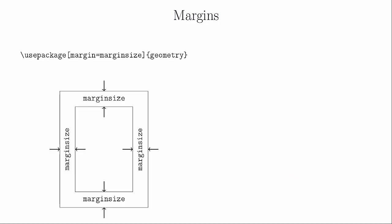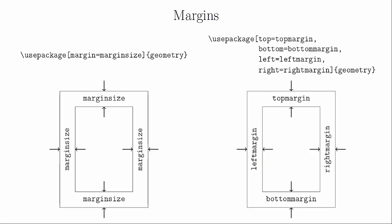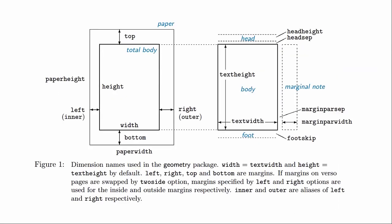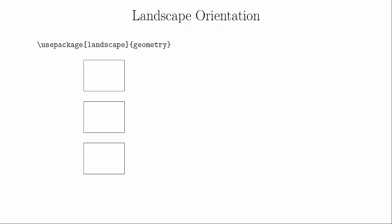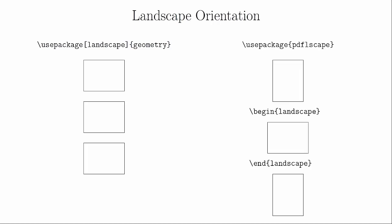The geometry package lets you specify each margin separately. If you wanted to have your paper oriented as landscape instead of portrait, you can use the landscape option with the geometry package. The downside is that it makes the entire document in landscape mode. If you only wanted parts of the document to be in landscape, the pdfLscape package can do this — just put the parts you want in landscape mode between \begin{landscape} and \end{landscape}. This can be helpful if you have a wide table or image that needs extra width.